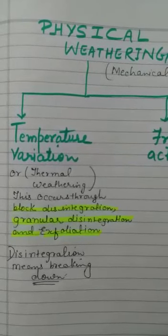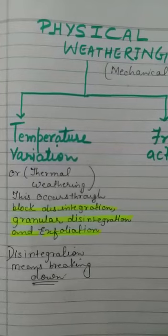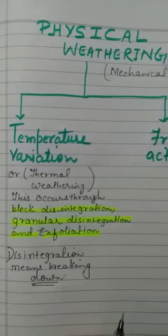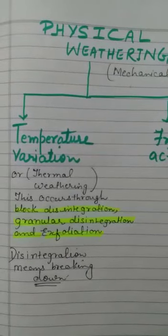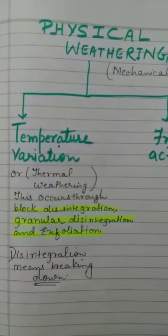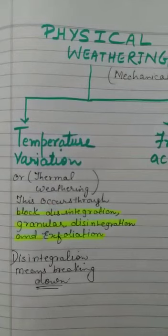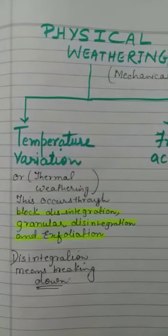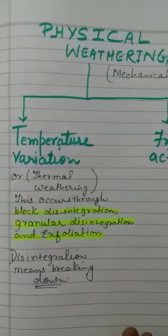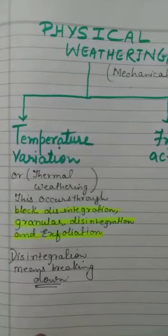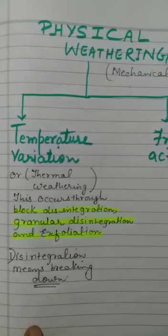Exfoliation: in deserts, the outer layers of the rock expand much faster than the inner cooler area. At night the reverse happens, causing stress. This leads to cracks and splits, and the outer part peels off from the inner part in concentric layers, referred to as spalling.